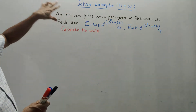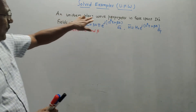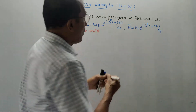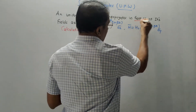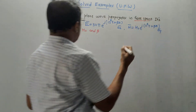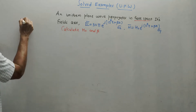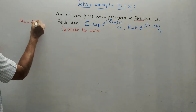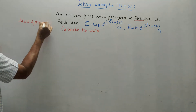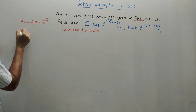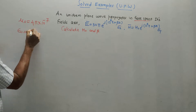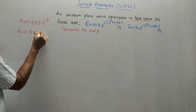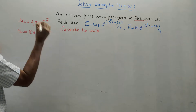First question: a uniform plane wave propagates in free space. This is an important thing — if it is free space, do remember the values: mu_0 is 4π × 10^(-7), and epsilon_0 is 8.854 × 10^(-12).